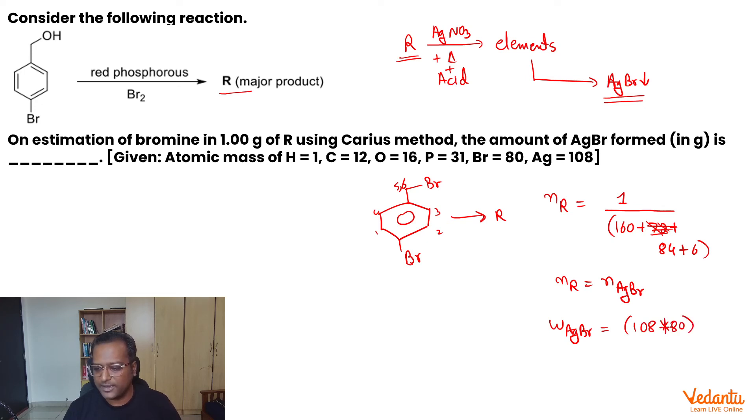Sorry, 108 plus 80. This will be multiplied by number of moles here. That will come out to be 250, 1 by 250. Simple question, right? 188 upon 250 gives you your final answer.